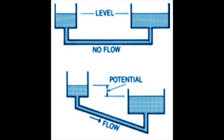Heat flows naturally from a higher temperature to a lower temperature, but not necessarily from more heat to less heat. To better understand this, we can consider a water analogy. In this analogy, the height between different levels of water represents the temperature difference between two heat sources, and the volume of water represents the amount of heat. When both reservoirs are at the same level, there is no flow — the fact that there is more water on one side is of no consequence. If the levels are not the same, then flow occurs, even when the amount of water is less on the higher side. Just as water will flow only down, heat will flow only from a higher temperature to a lower temperature.